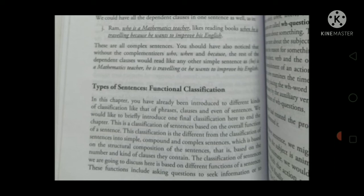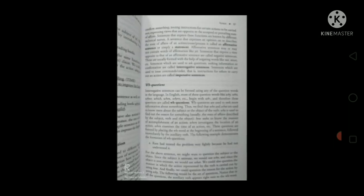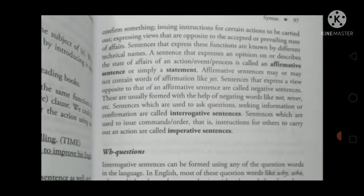The classification of sentences we are going to discuss here is based on the different functions of a sentence. These functions include asking questions to seek information, confirming something, issuing instructions for certain actions to be carried out, and expressing views opposite to the accepted state of affairs. A sentence that expresses an opinion or describes the state of affairs of an action, event, or process is called an affirmative sentence, or simply a statement.